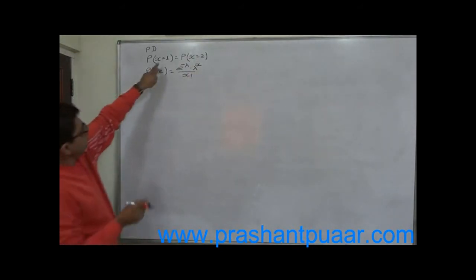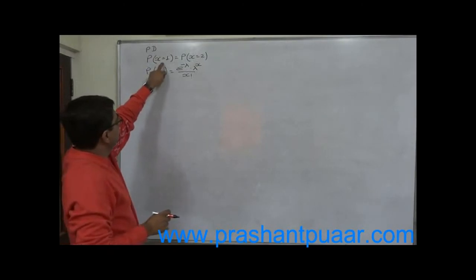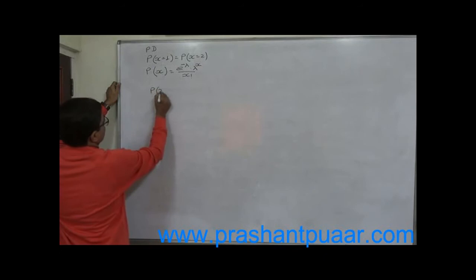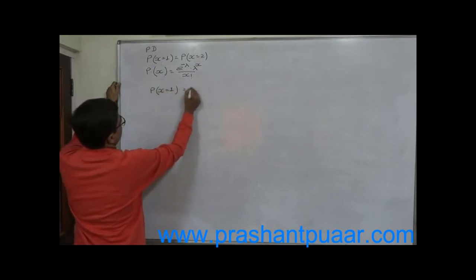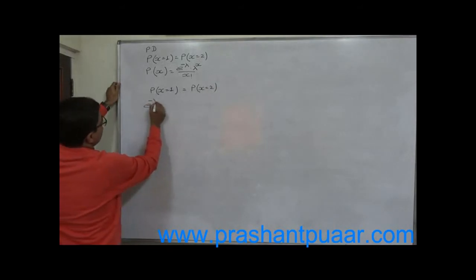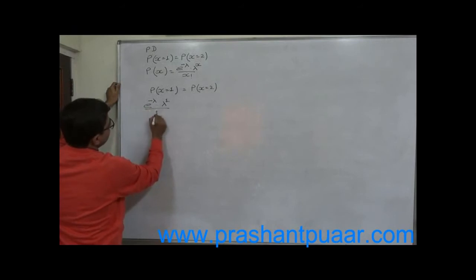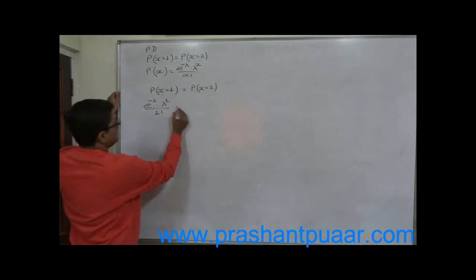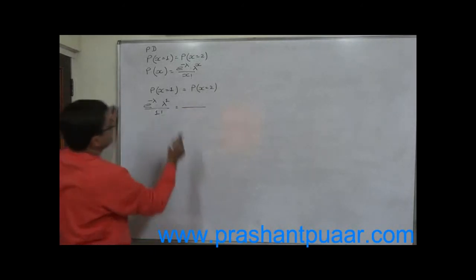Now if we want to calculate p of 1, it will be e raise to minus mean into mean raise to 1 divided by 1 factorial.